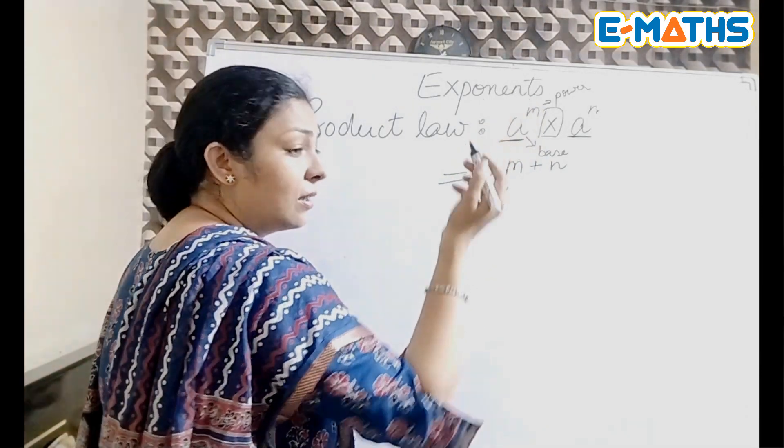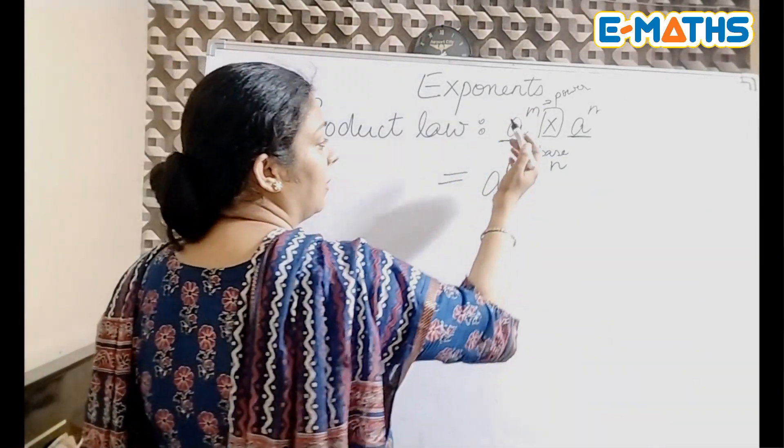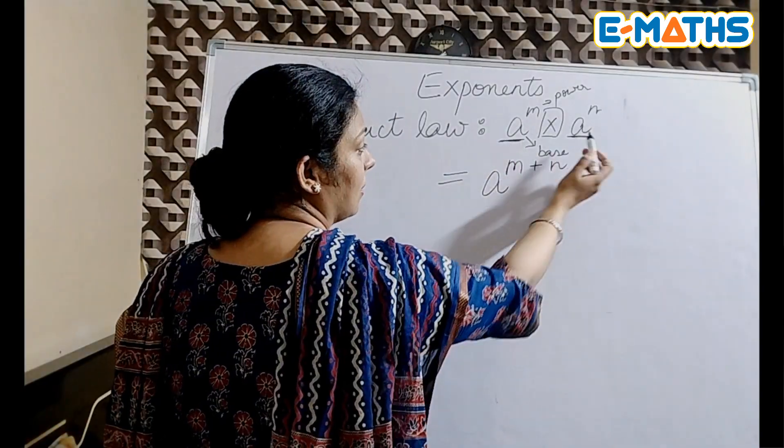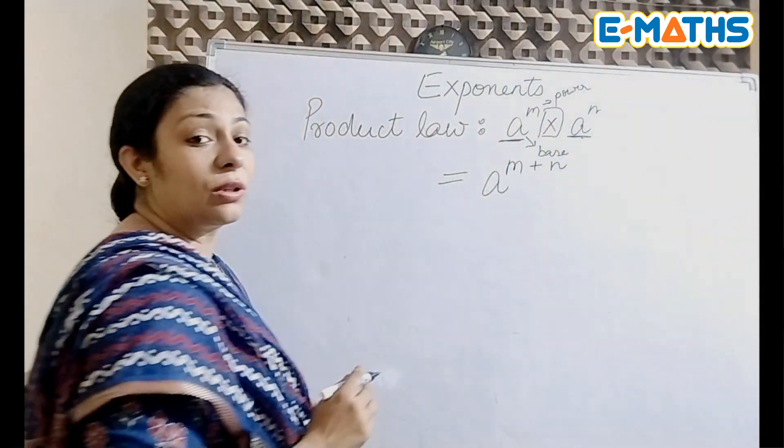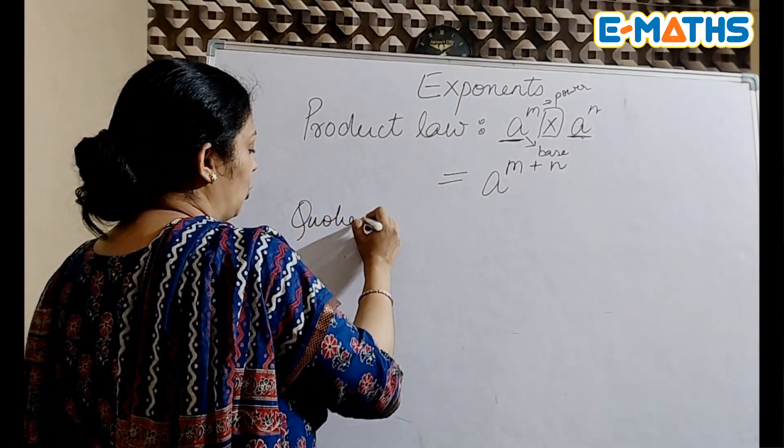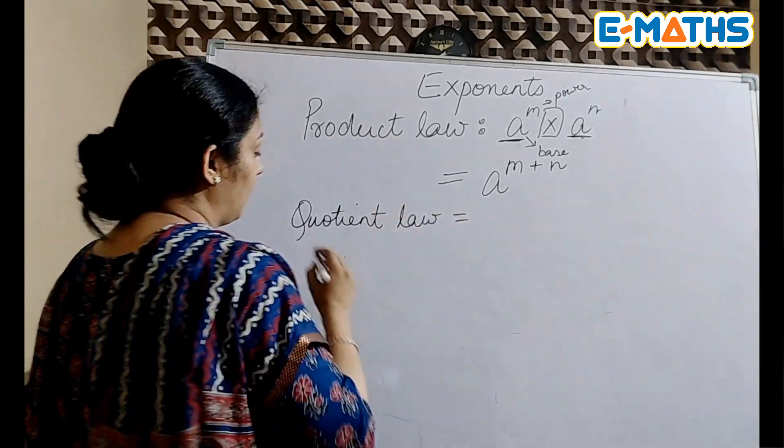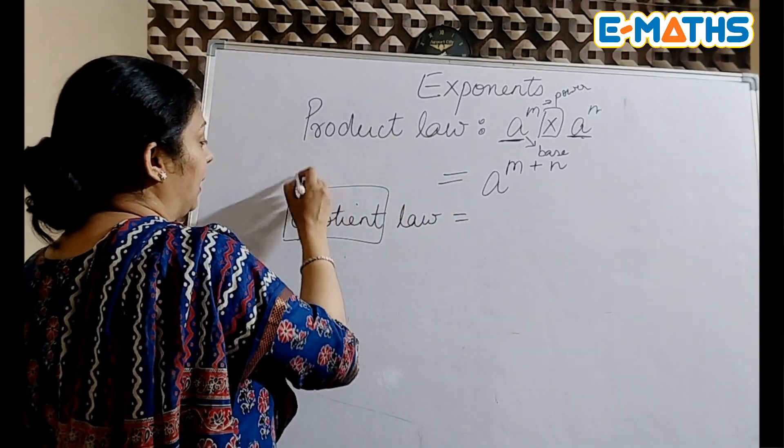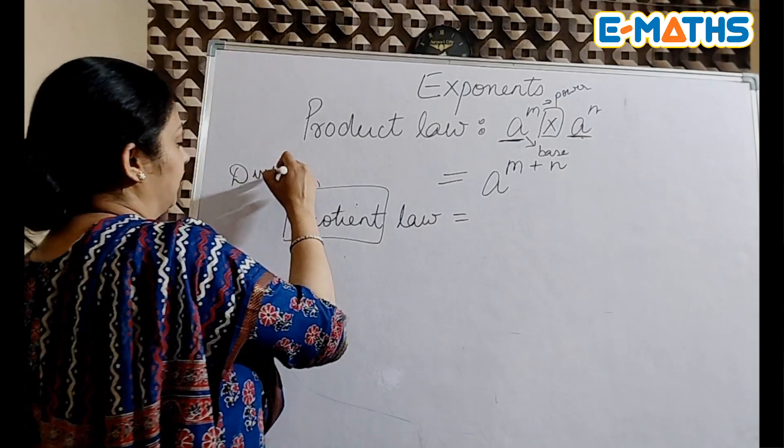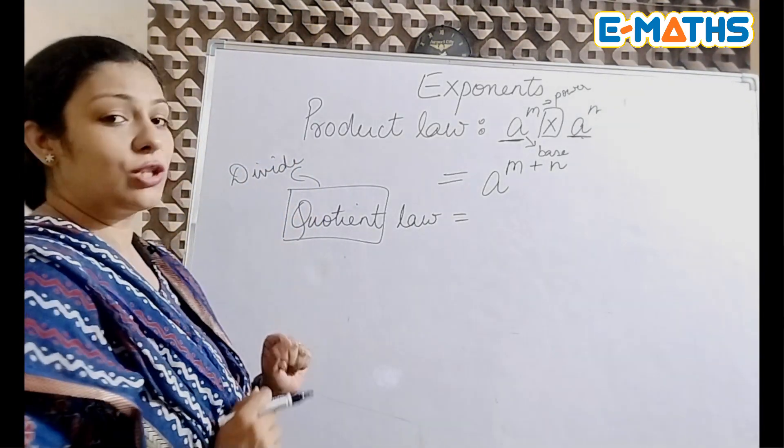This is applicable even if it is a variable or a number—you can apply this law anywhere, just check that the base is same and there is a product sign in between. Then comes the quotient law.